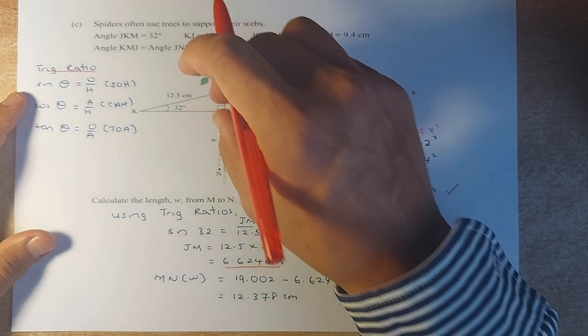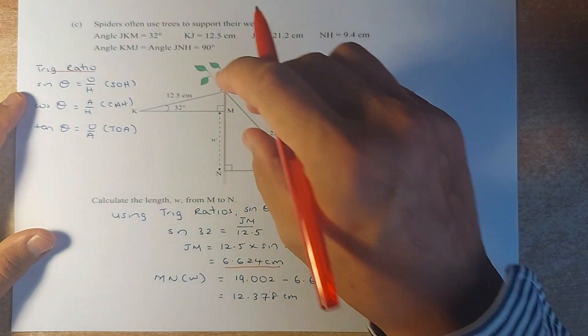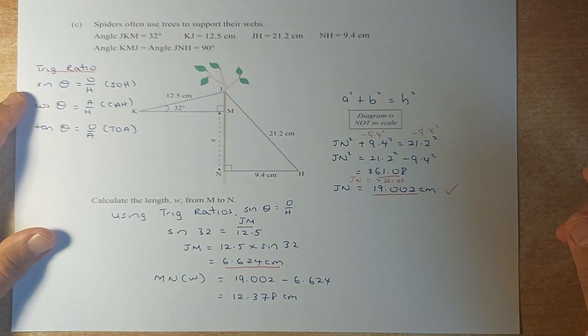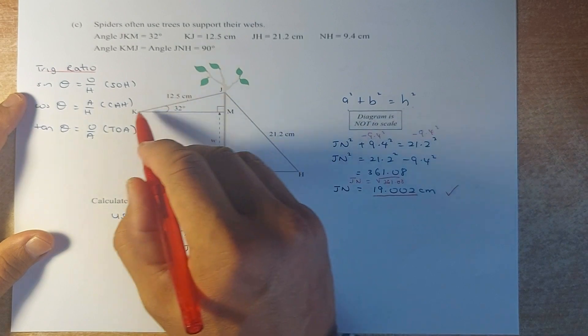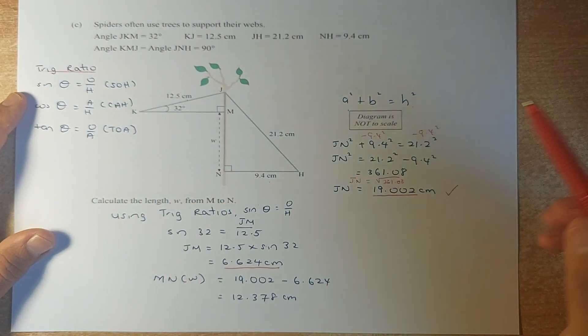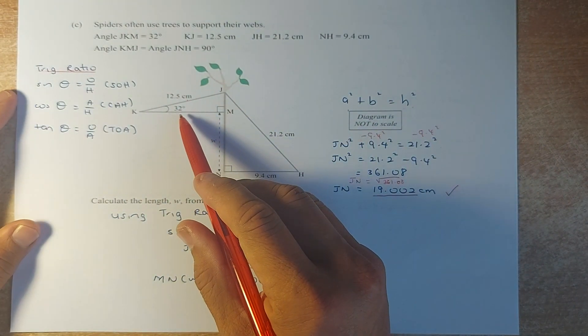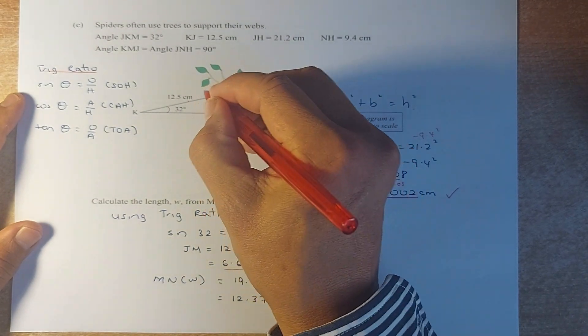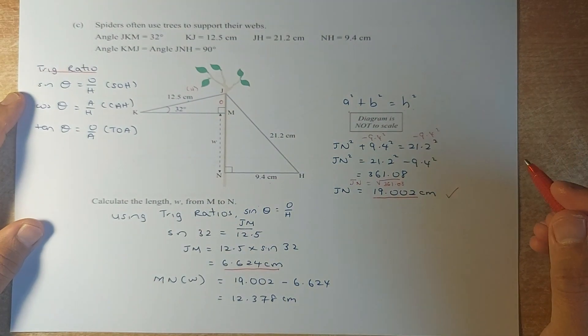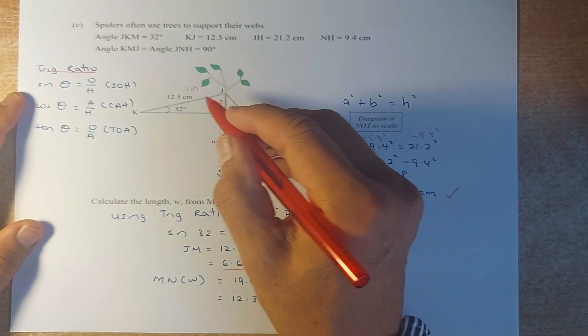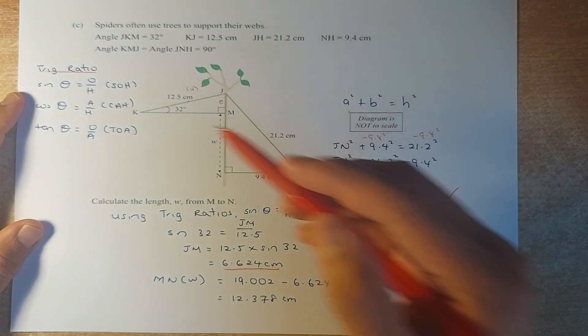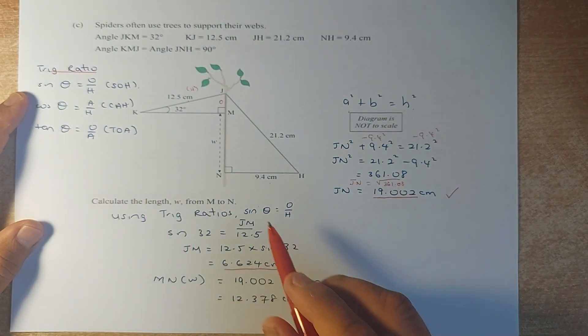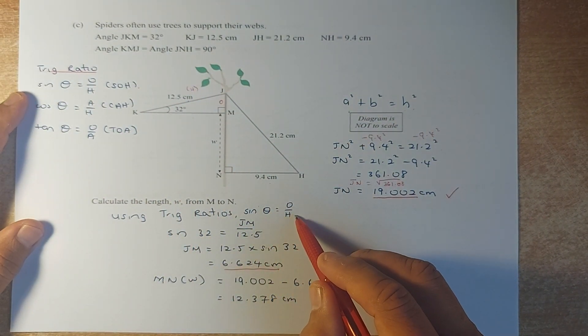So now we have to calculate JM. If we can calculate JM, if we minus them, we will get the length W. So JM, we have to use this right-angle triangle. This is SOH CAH TOA again. So you need to label them. This is opposite and that has to be the hypotenuse. JM is the opposite and 12.5 is the hypotenuse. So we have to look at the formula and we have to use the sine formula. So sine theta is opposite over hypotenuse.